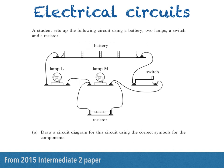Here's a question from the 2015 Intermediate 2 paper. A student sets up the following circuit using a battery, two lamps, a switch and a resistor. We're then asked to draw a circuit diagram for this circuit using the correct symbols for the components.